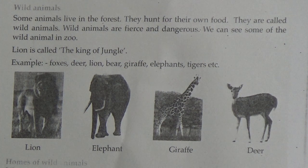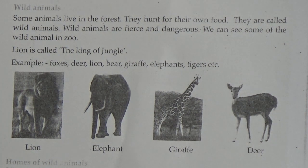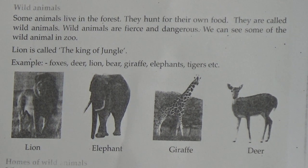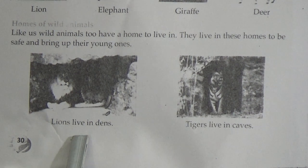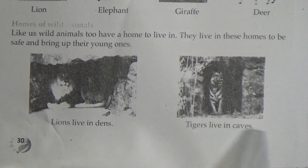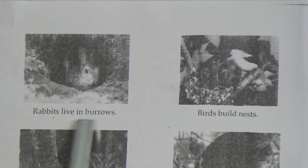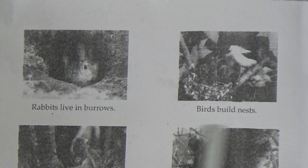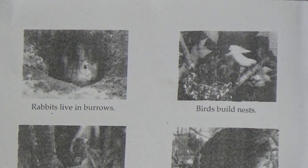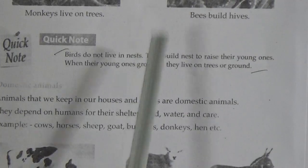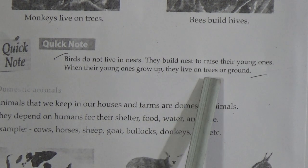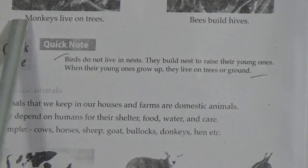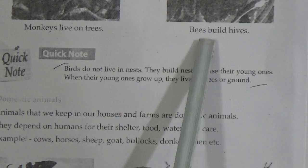Here are pictures of lion, elephant, giraffe, and deer. Now, homes of wild animals — like us, wild animals also have a home to live in. They live in these homes to be safe and to bring up their young ones. Lions live in dens, tigers live in caves, rabbits live in burrows, and birds build nests. They build nests to raise their young ones. When their young ones grow up, they live on trees or on the ground. Monkeys live on trees and bees build hives.